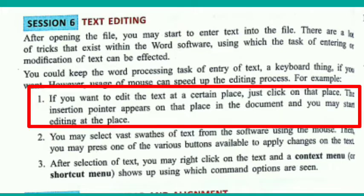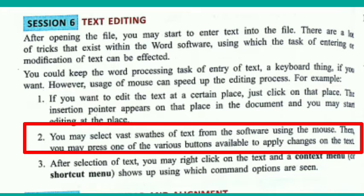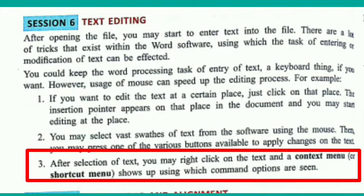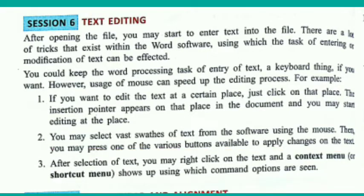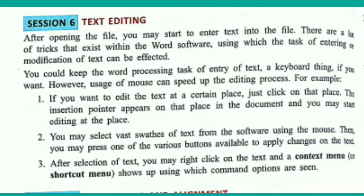If you want to edit the text at a certain place, just click on that place and the insertion pointer appears there, and you may start editing. You may select a broad area of text using the mouse, then press one of the various buttons available to apply changes. After selection, you may right-click on the text and a context menu — a shortcut menu — will appear with various commands you can apply on the selected text.